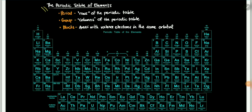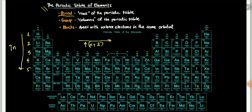Here we have the periodic table of elements. The periodic table arranges elements in order of increasing n plus l from left to right, and increasing n from top to bottom. The periods are the rows — period 1 through 7. The lanthanides are in period 6 and the actinides are in period 7.